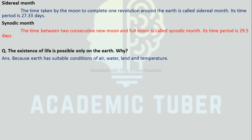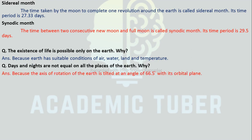Now we are going to discuss some questions from this unit. Why is the existence of life possible only on Earth? The existence of life is possible on Earth because the Earth has suitable conditions of air, water, land, and temperature. Days and nights are not equal in all parts of the Earth — why? Because the axis of rotation of the Earth is tilted at an angle of 66.5 degrees with the orbital plane.